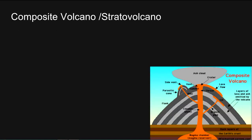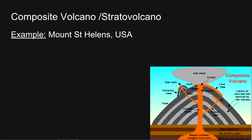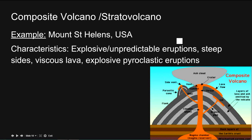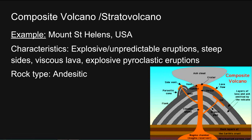Composite volcano: an example is Mount St. Helens in the USA. The characteristics include explosive and unpredictable eruptions, steep sides, viscous lava, and explosive pyroclastic eruptions. It's created by layers of ash and rock built up from eruptions as viscous lava cools and solidifies on the sides — as you can see here, the layers. Rock type is largely andesitic.